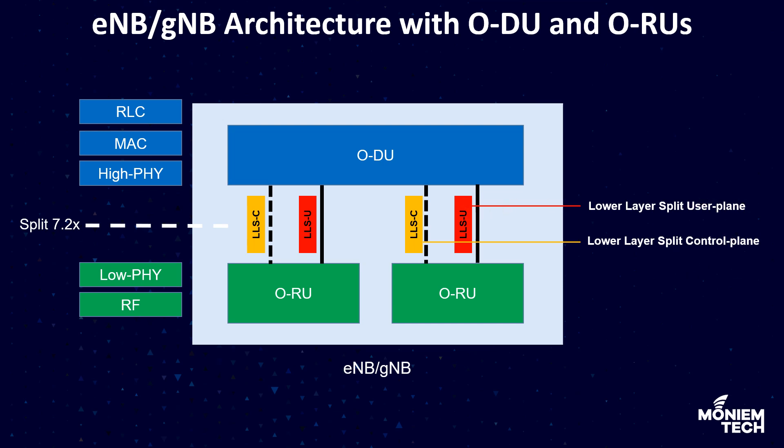As discussed before, LLS-C is the LLS control plane — a logical interface between ODU and ORU — and LLS-U is for the user plane. If you missed the part about why you need a split between ORU and ODU for flexibility, please revisit the last episode about function split in ORAN.